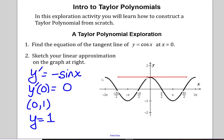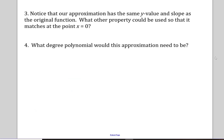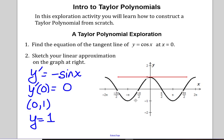Notice that that's not a very good approximation of the entire curve. The approximation has the same y value and slope as the original function, but what other property could be used to help match at the point zero? Looking at the graph, the property that could help is concavity, since the cosine curve is concave down at x equals zero. That means a second degree polynomial — a quadratic — would work.